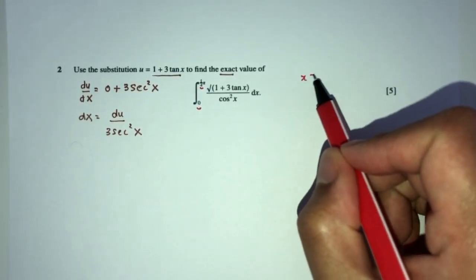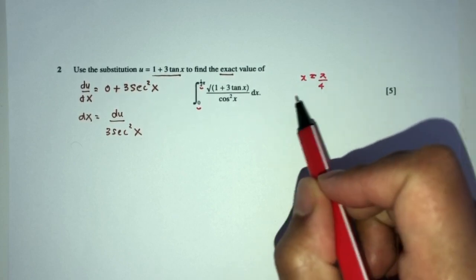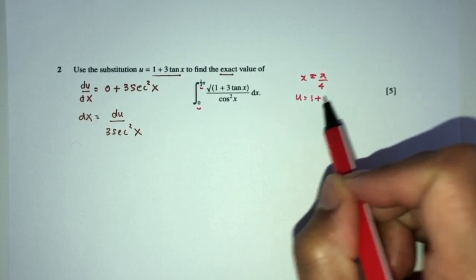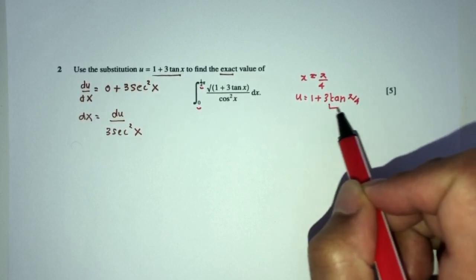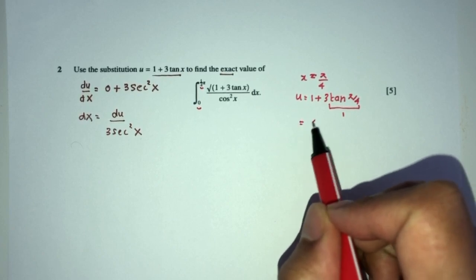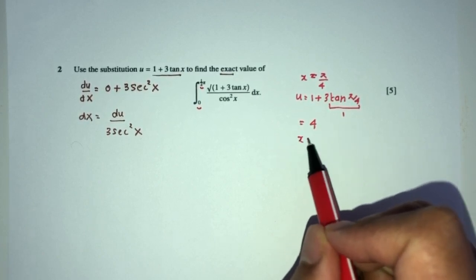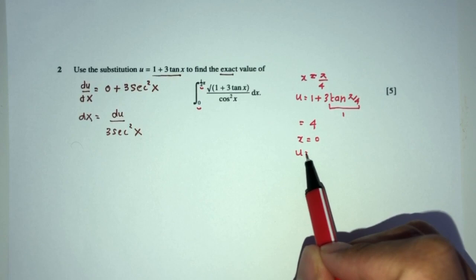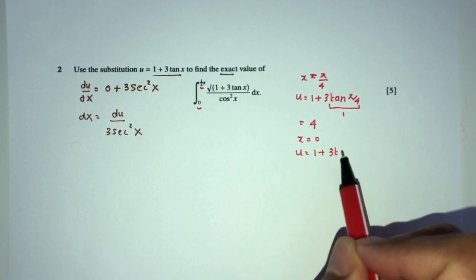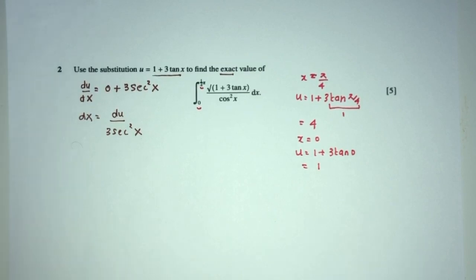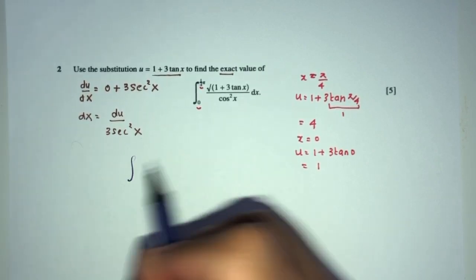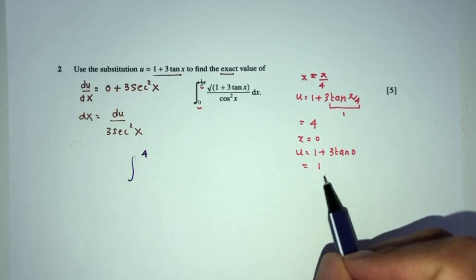When x is equal to π/4, the value of u will be the value of 1 + 3 tan π/4. Now this is just 1, that will become the value of just 4. Great. Now when x is 0, u will be the value of 1 + 3 tan 0, and that will be the value of just 1. So your new limits will be 4 on top and 1 below.